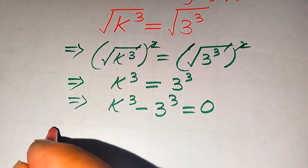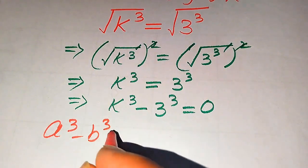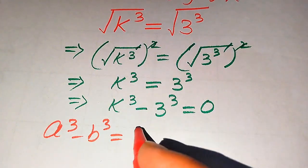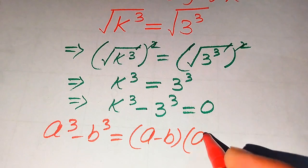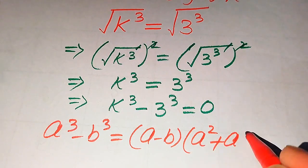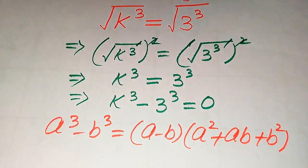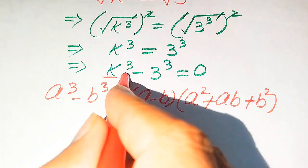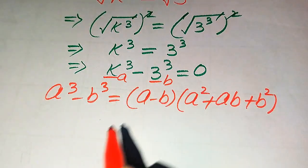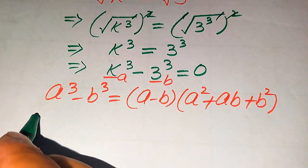The difference of cubes formula states: a cubed minus b cubed equals (a minus b) times (a squared plus ab plus b squared). According to this formula, the base of the first term is our a and the base of the second term is our b.